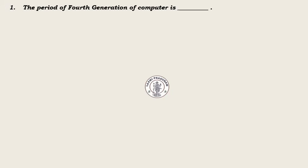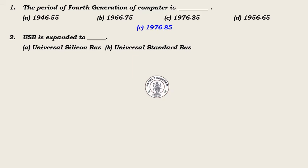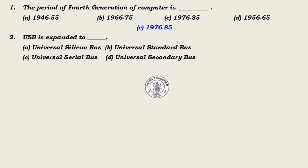Choose the best answer. Question 1: The period of fourth generation of computers is? Options: 1946–55, 1966–75, 1976–85, 1976–65. Answer: 1976–85. Question 2: USB is expanded to dash. Options: Universal Silicon Bus, Universal Standard Bus, Universal Serial Bus, Universal Secondary Bus. Answer: Universal Serial Bus.